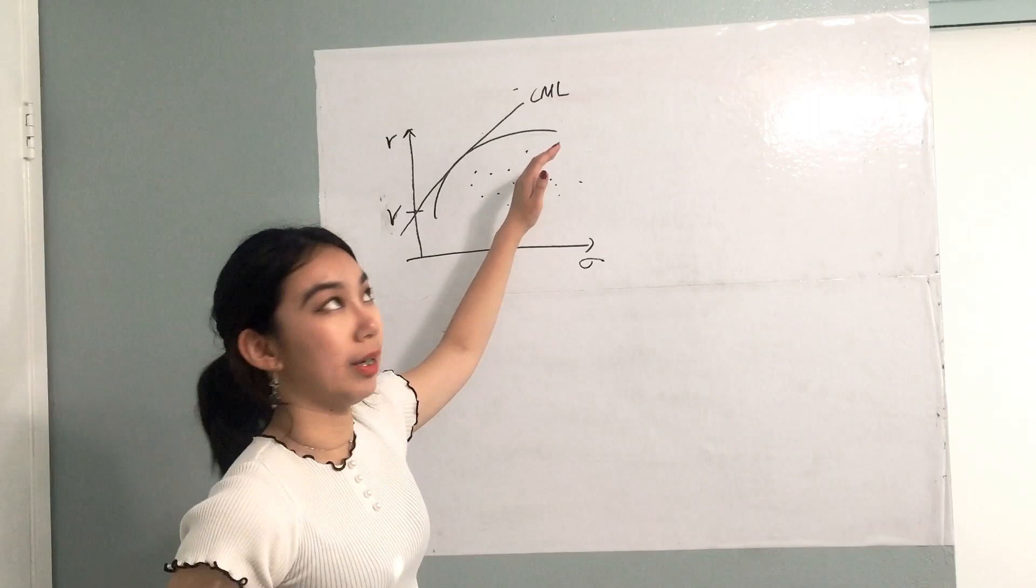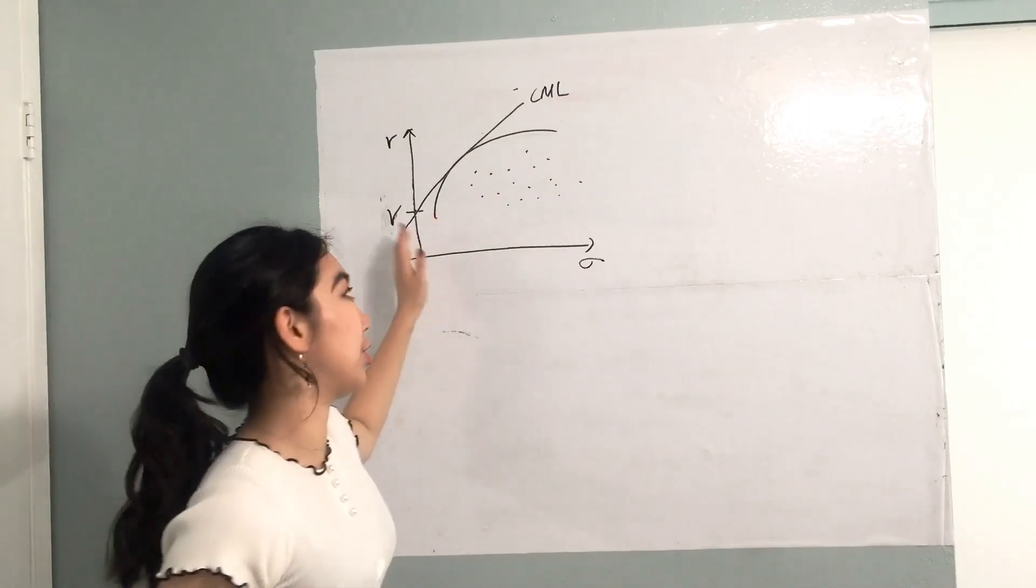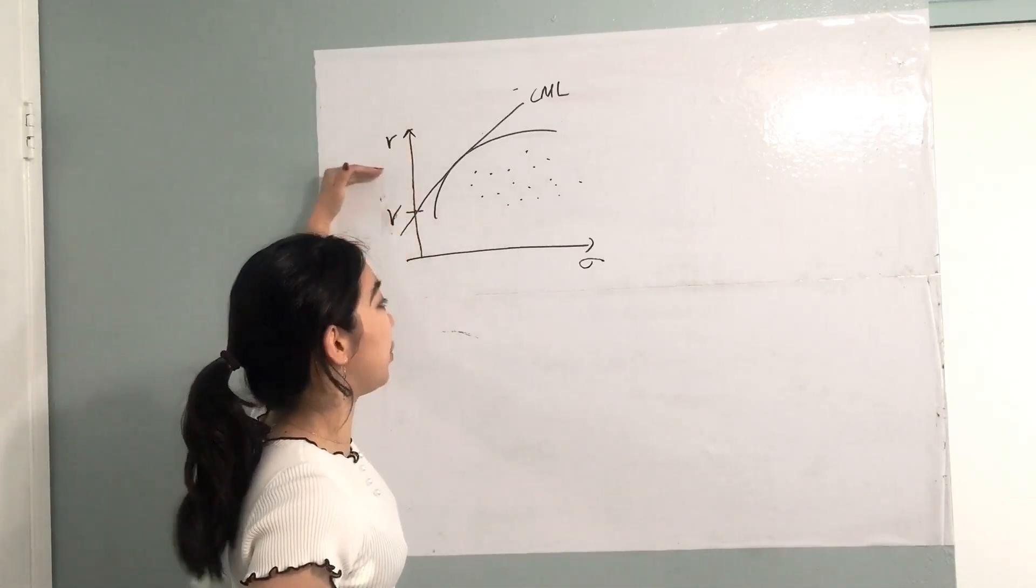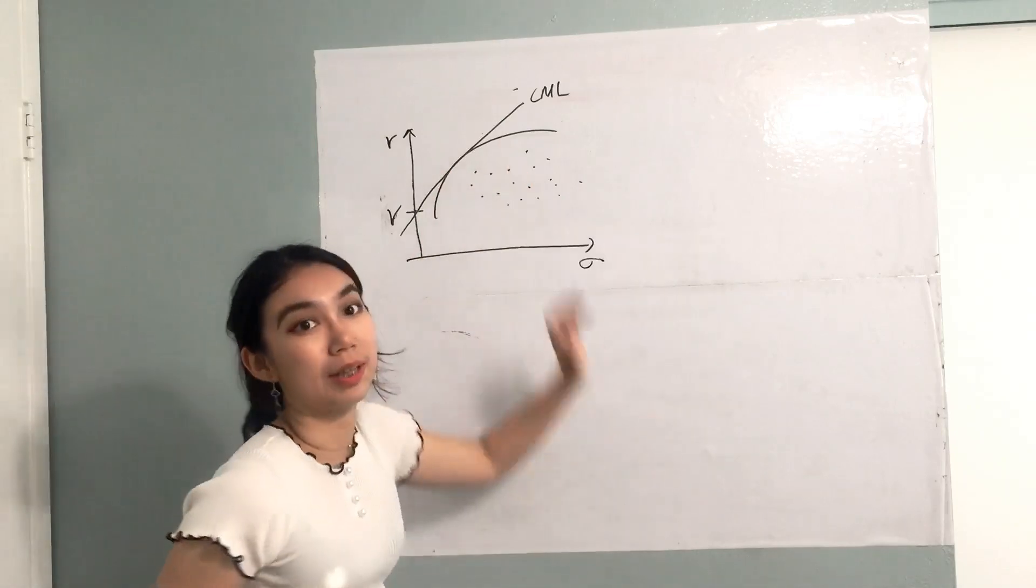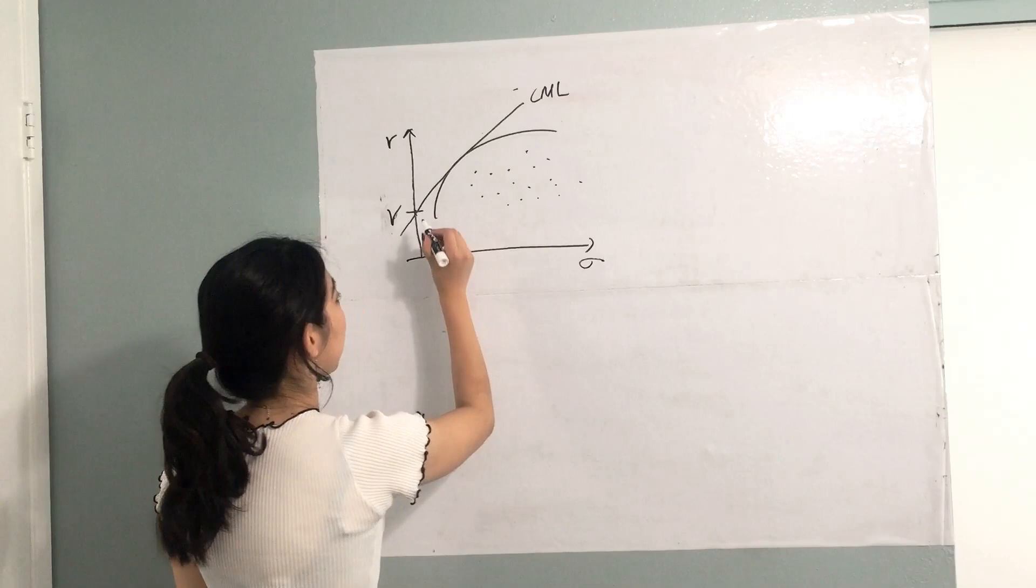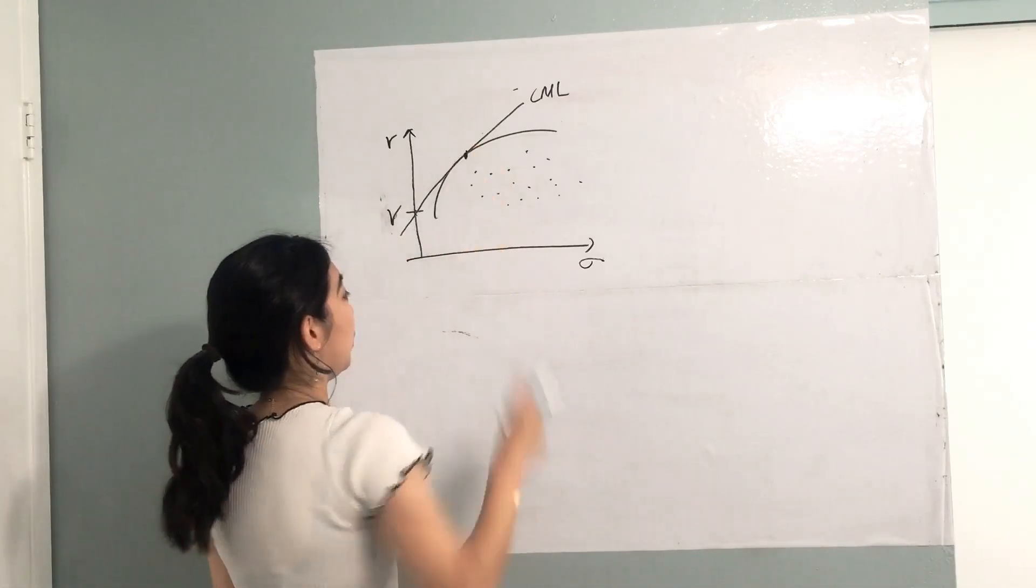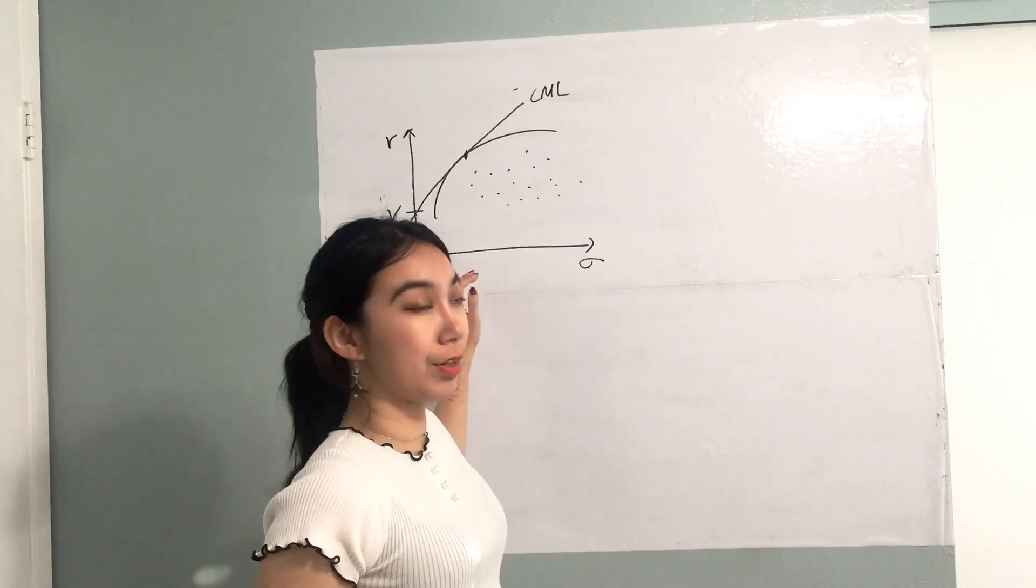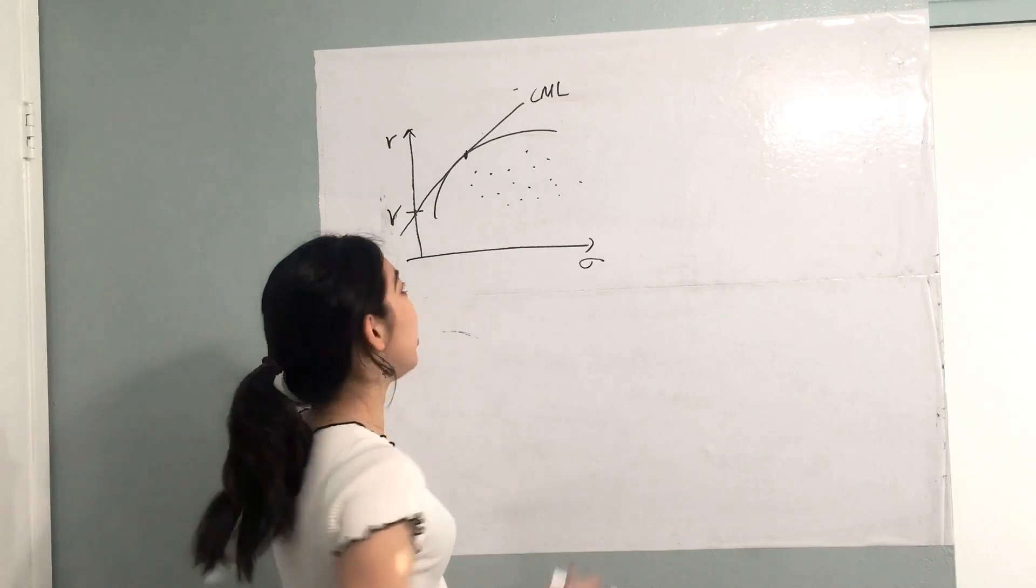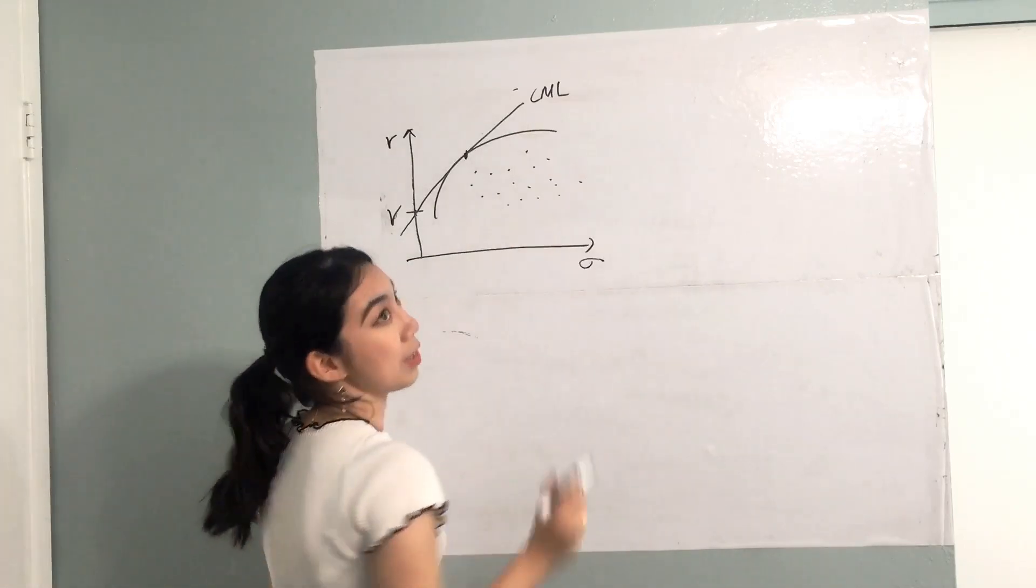The capital market line is actually the most efficient line, even more efficient than the efficient frontier, since it can always get a larger return with the same risk level. We can always invest in the portfolio between the risk-free asset and the tangent asset, which are a portion of the risk-free asset and a portion of the tangent portfolio. And with the short settings available, we can even get to the right of the tangent portfolio.